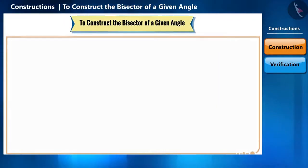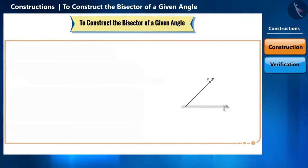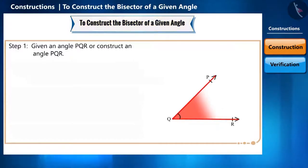Let us now learn to construct an angle bisector. Suppose we are given an angle, angle PQR, which you can see on the screen. Let's construct a bisector of this angle PQR. For this, we will have to follow some steps.